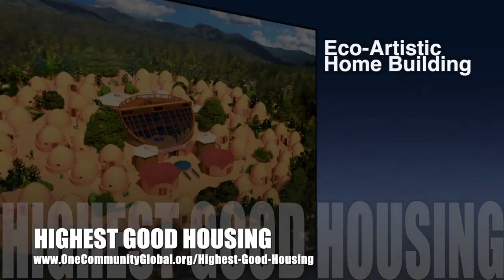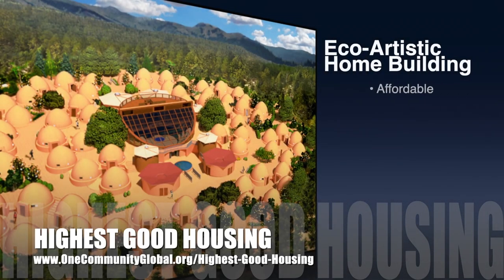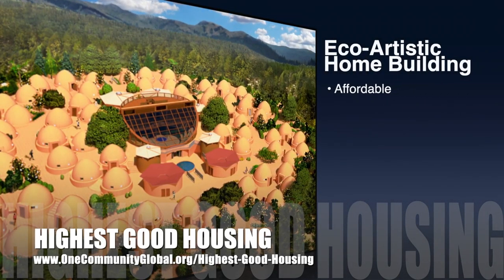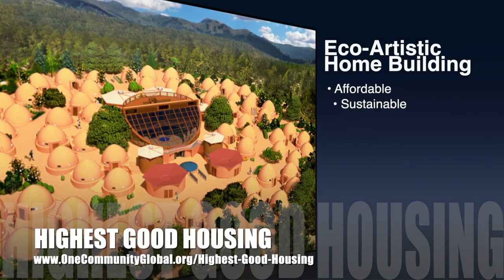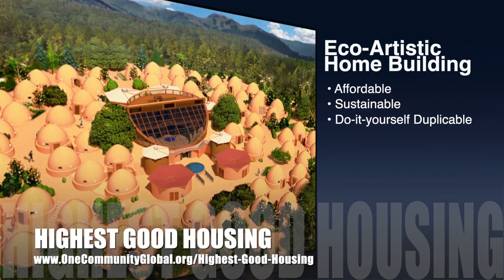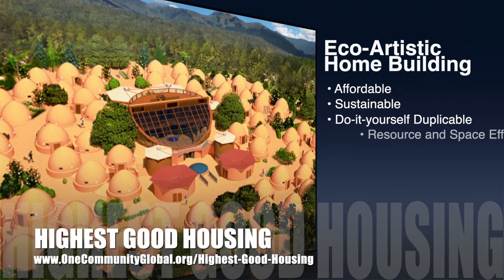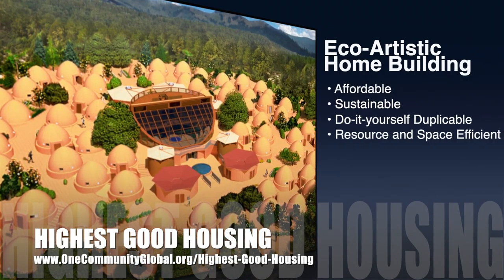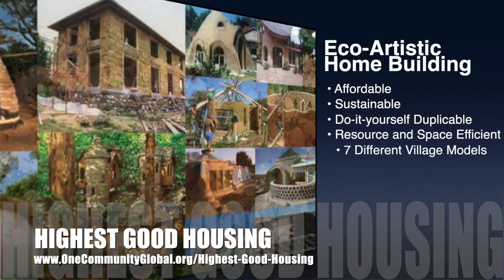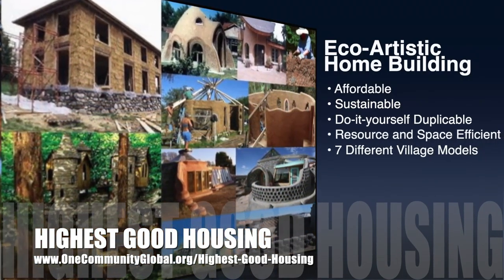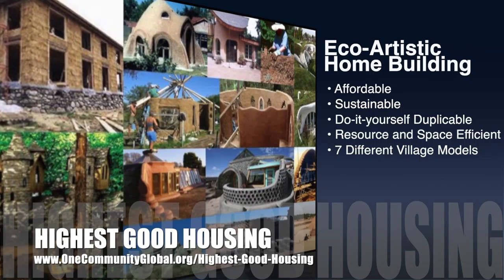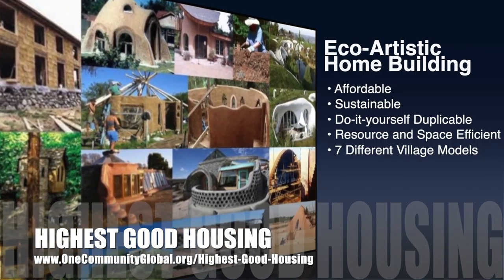The One Community approach to highest good housing is eco-artistic home building that is affordable, sustainable, do-it-yourself, duplicable, resource and space efficient, and consists of seven different sustainably constructed village models.